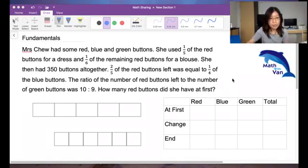Let's take this here. Ms. Chu had some red, blue and green buttons, and this is from Stella, this question. She used one-fifth of the red buttons for a dress and one-sixth of the remaining red buttons for a blouse. She then had 350 buttons altogether. Two-fifths of the red buttons left was equal to one-quarter of the blue buttons. The ratio of the red buttons left to the number of green buttons was 10 is to 9. How many red buttons did she have at first?